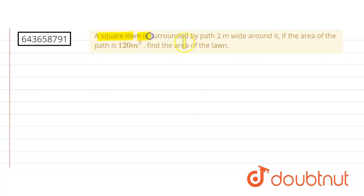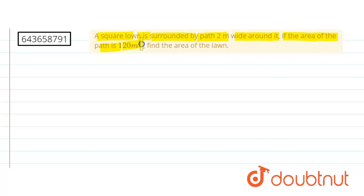We have a square lawn which is surrounded by a two-meter-wide path around it. If the area of the path is given as 120 square meters, find the area of the lawn.